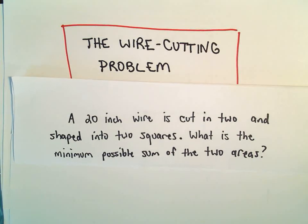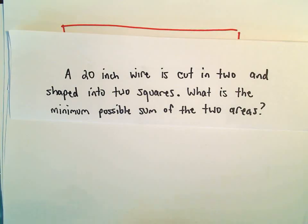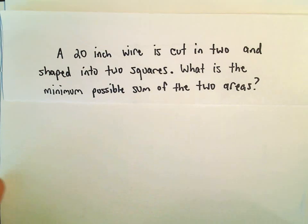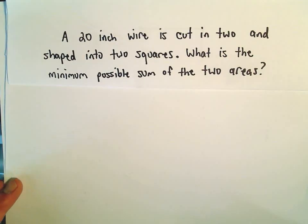Okay, in this example, we're going to do a little wire cutting problem. So we've got a 20-inch wire, and we're going to cut it into two pieces, and we're going to make that into two squares. We want to figure out what's the minimum possible sum of the two areas.